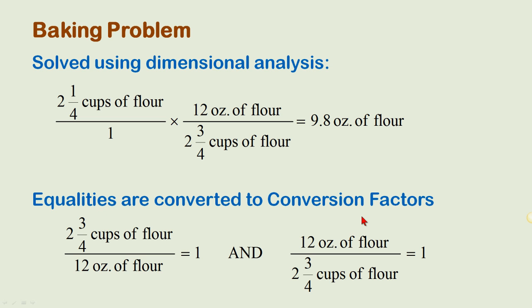Equalities are converted to conversion factors during dimensional analysis. We know that 2¾ cups of flour is exactly equal to 12 ounces of flour. If we set these on top of each other, it's the same as saying they're equal to one. The same can be said of the inverse. 12 ounces of flour is exactly equal to 2¾ cups of flour, which is also equal to one. Since they're both equal to one, we can place this conversion factor like we have here, or we can use the inverse. It's like multiplying the first part of the problem by one.